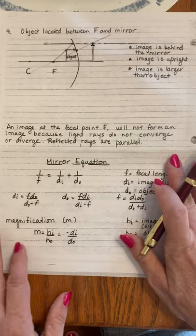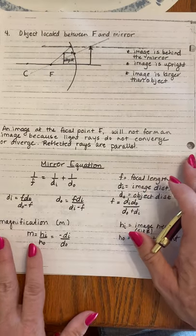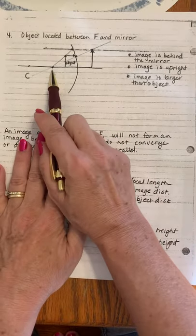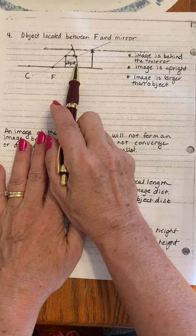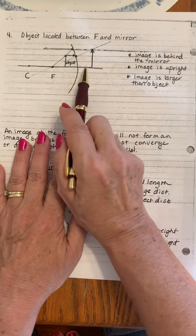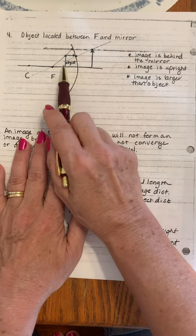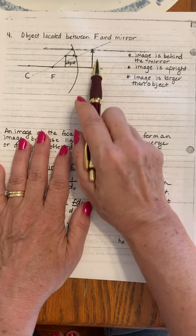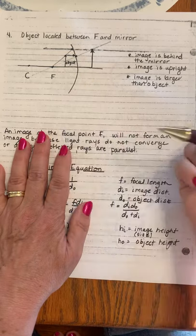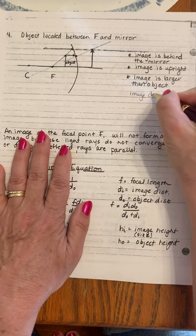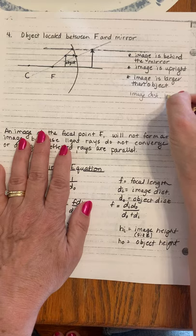Now imagine that the object, and this is what we usually see with the makeup mirror. We are between the focal point and mirror, and that's what makes it enlarged. You'll notice this time the object is here. The image is beyond the mirror. It's on the other side. So the image distance will be negative. The image distance is negative.